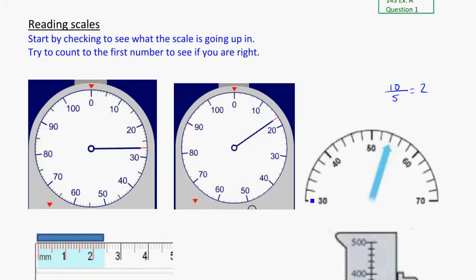So this is going up in twos. Thirty, 32, 34, 36, 38, 40. And now I know that I'm in the right spot with it.